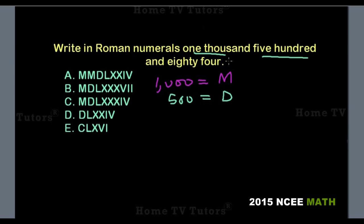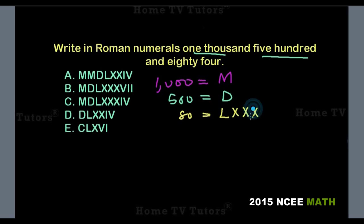Next is 80. 80 is represented by the symbol L, which is 50. X is 10, so we have 3 more X's. 50 plus 30 gives us 80. So LXXX represents 80 in Roman numerals.